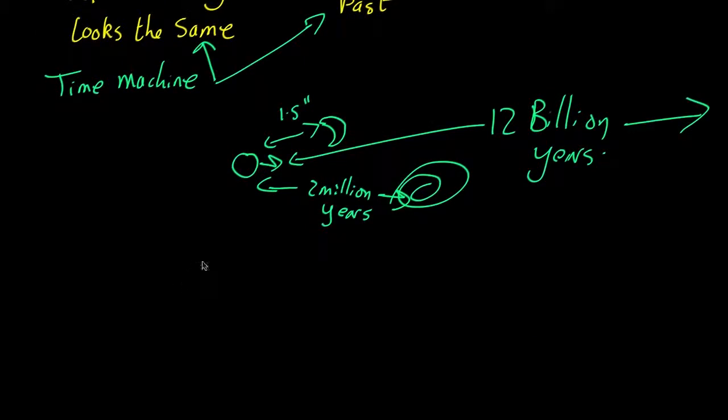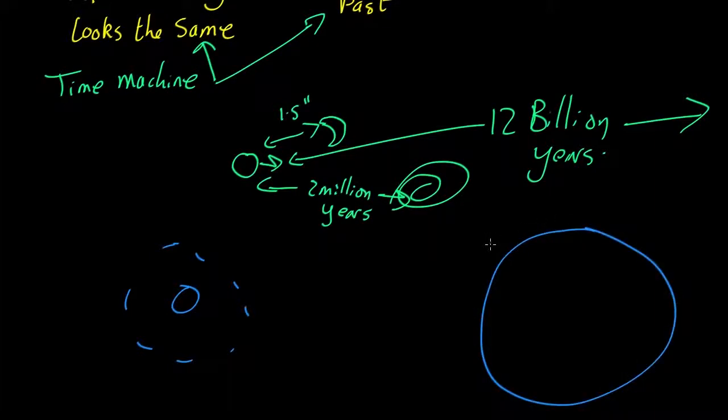So what this means is, when we look at the bits of the universe near the Earth, here's the Earth, the bits we see near it, we're seeing more or less as they are today, whereas when we look at some part of the universe a long way away, we're seeing it not as it is now, but as it was in the past. So that's how we can, in principle, test our two theories.